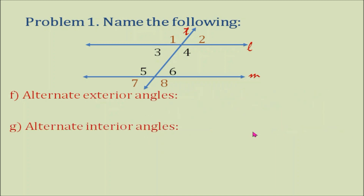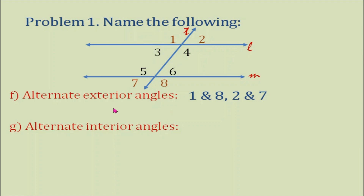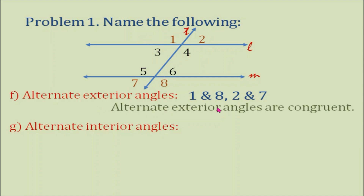How about alternate exterior angles? The exterior angles here are 1, 2, 7, and 8. The alternate exterior angle pairs are angles 1 and 8, and angles 2 and 7. Let's remember that alternate exterior angles are congruent.